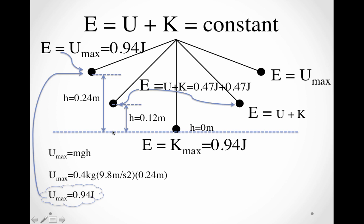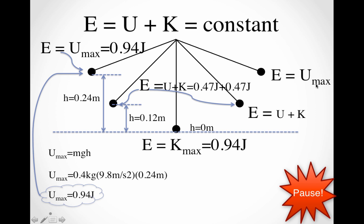It's half potential because it still has halfway to fall, and half kinetic because it's picked up speed. Once it gets down to the bottom level, we can calculate the kinetic energy using conservation of energy — we don't need to know the velocity and use ½mv². Since we know at the bottom there is no more potential left, the total energy of 0.94 joules has to be all kinetic energy. When it's over here on the other side, you have half and half again — 0.47 and 0.47. When you get to the other side, you're back to having all 0.94 joules as potential energy.